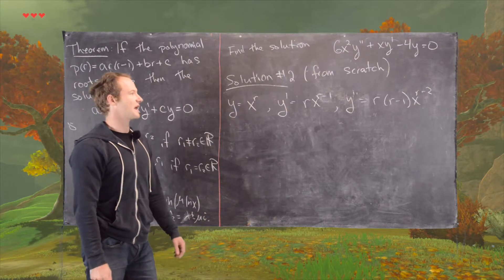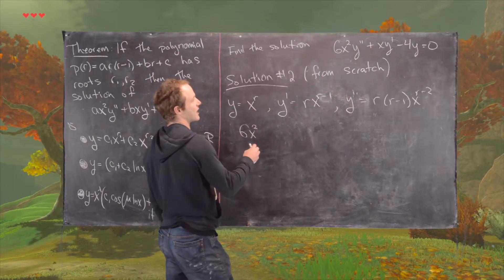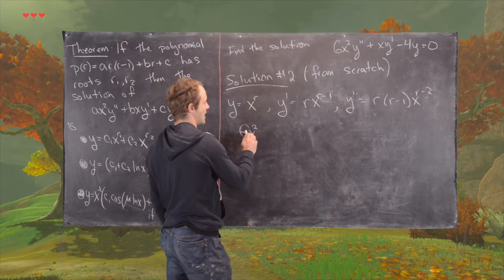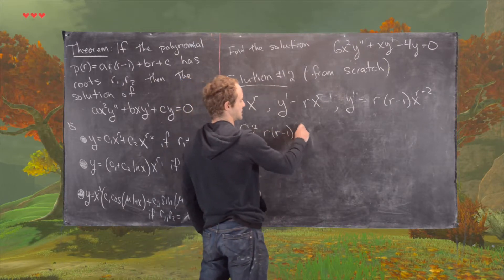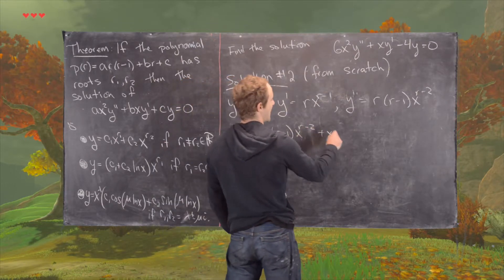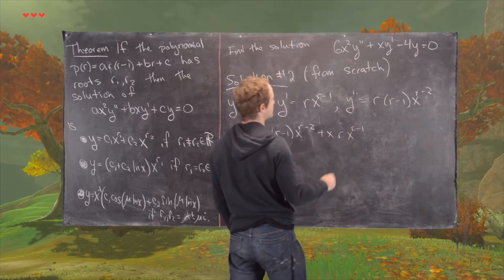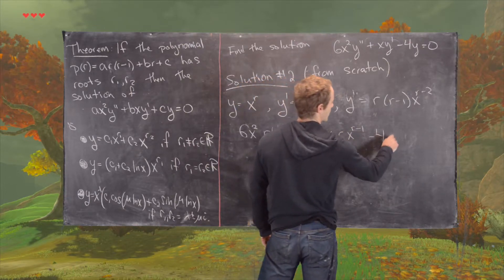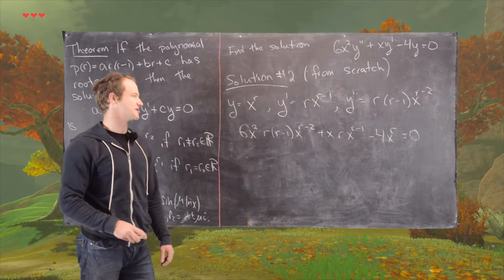Now, plugging that into the differential equation, we have the following. We have 6X squared times Y double prime, so that's going to be R times R minus 1 X to the R minus 2, plus X times Y prime, so that's going to be R X to the R minus 1, and then finally minus 4 X to the R, which is Y, and we have that equals 0.